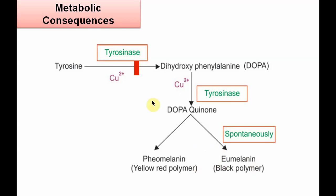But in albinism, this enzyme tyrosinase is deficient. So melanin synthesis does not take place, leading to hypopigmentation or no pigmentation.